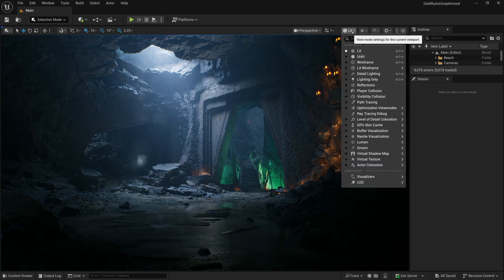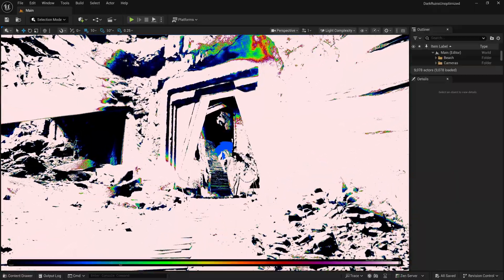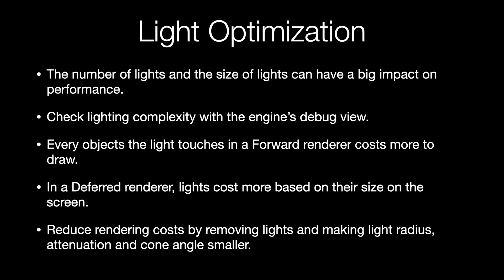Now let's talk about lighting. The number of lights in your scene and the size of the light sources can have a big impact on performance. Most engines have a debug view where you can check the complexity of the lighting in your scene and find hotspots. In a forward renderer, every object a light source touches incurs additional rendering costs — some renderers actually render the object multiple times, once per light, which can significantly increase polygon count with many lights. In a deferred renderer, the larger the light source is on screen, the more costly it is. In both renderers, you can reduce costs by reducing the number of light sources overall and by reducing the size of existing lights — reducing the light's attenuation distance, radius, and cone angle will make it cheaper to render.